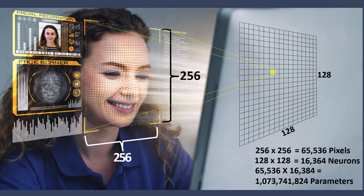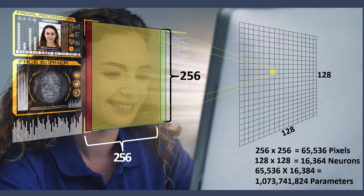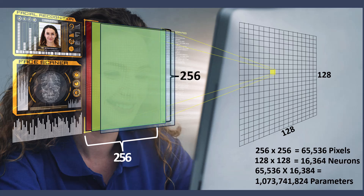And if you add color, there's a red layer of pixels at 256 by 256, a green layer, and a blue layer — so really three times 256. That's over 3 billion parameters — the connections between the neurons and the pixels — just in this low-resolution image. So it's just not tenable to work this way.